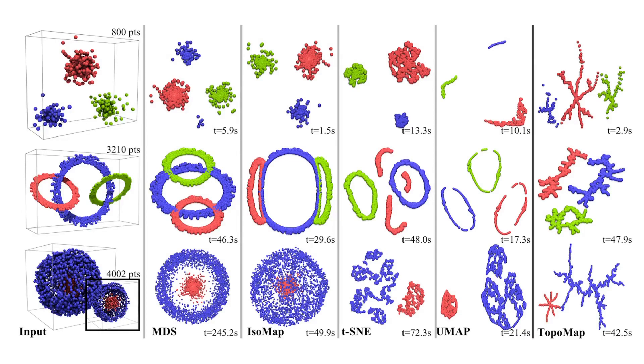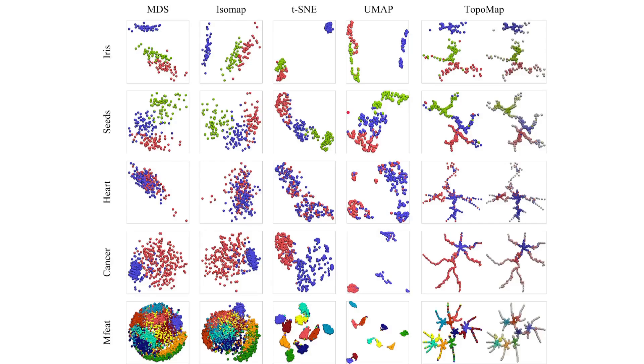To address this, we present TopoMap, a dimensionality reduction method that provably preserves the topological features of the data during the projection.